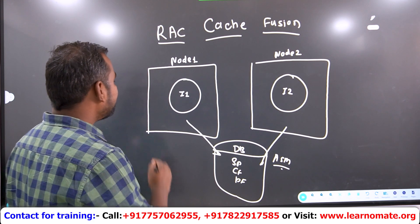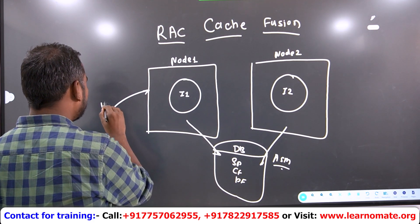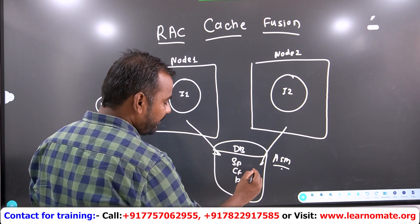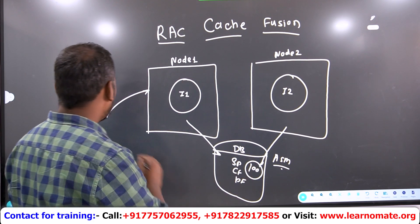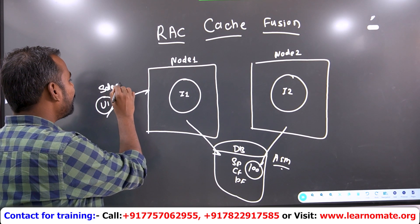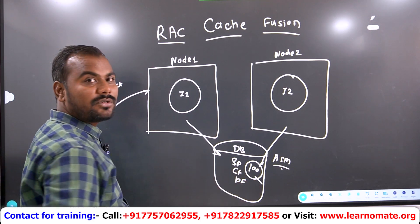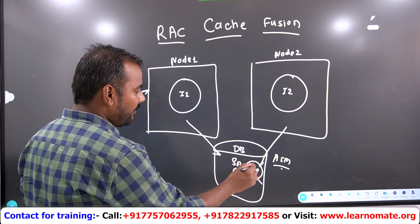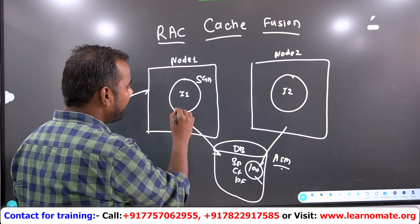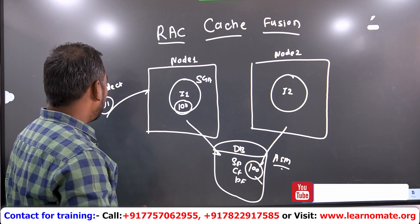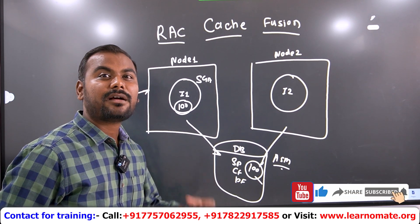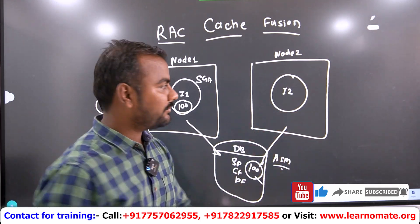Let me give you an example. There is a User 1 who got connected to Node 1, and this is the location where the data is available — let's say the data is 100. User 1 fires a command like SELECT * FROM table_name, requesting that record. So this value 100 will come from the database into the SGA of Node 1.